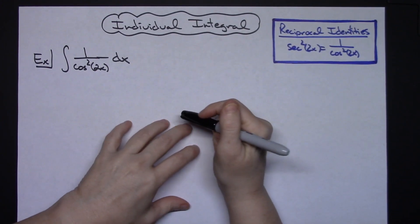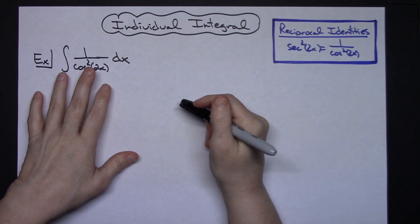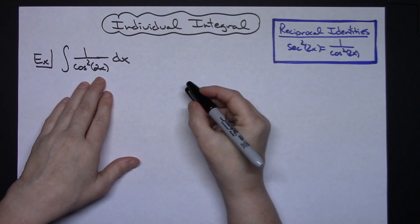In this video I'm going to be working out an individual integral. We're going to take a look at the integral of 1 over cosine squared 2x dx.